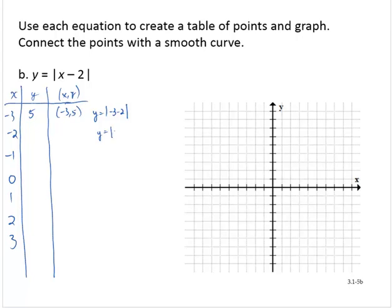y would equal the absolute value of negative 2 minus 2. That's negative 4. The absolute value of negative 4 is 4. And let's continue. Absolute value of negative 1 minus 2. Negative 1 minus 2 is negative 3. The absolute value of negative 3 is 3.